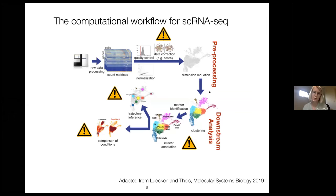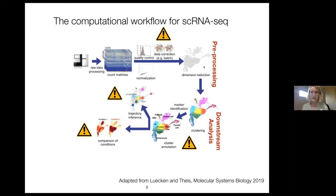Once you are at that point, you do a dimension reduction step, getting the data into a form that drastically reduces its dimensionality. This lets you visualize it in two or three dimensions and removes a lot of technical noise. Typically you use principal components analysis, and then for visualization you use further reductions on top of PCA, such as UMAP. After this comes clustering on the principal components, then identifying what your clusters are. Hopefully at that point you know what is in your samples, and then you can do trajectory inference or comparison of conditions.